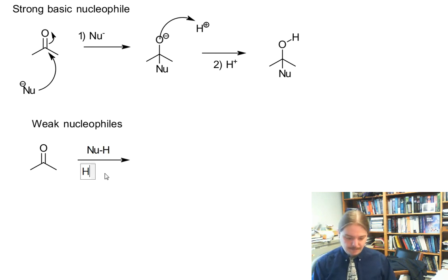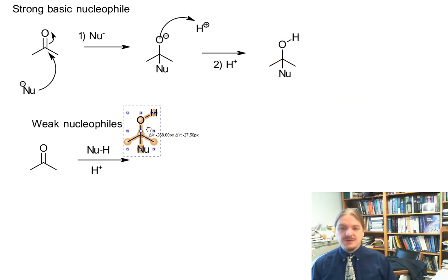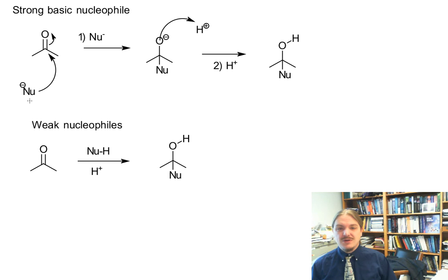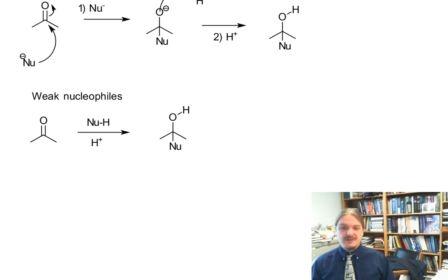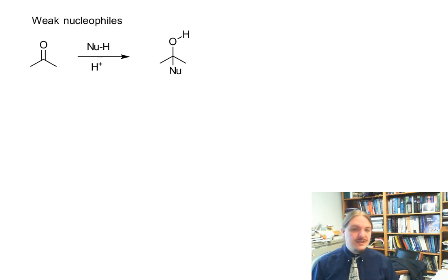So generally what this mechanism looks like is our weak nucleophile, which is often a protic compound and is neutral. And because it's not very nucleophilic, it's not going to react directly. But if we have acid present in the reaction mixture, we can get the reaction to occur. So if we look at the order of events in the strong basic nucleophile case, we have nucleophilic attack then proton transfer. Those steps are reversed in the weak nucleophile case.